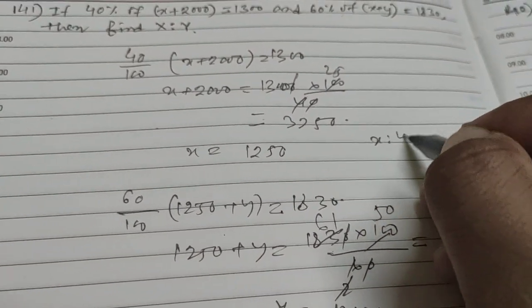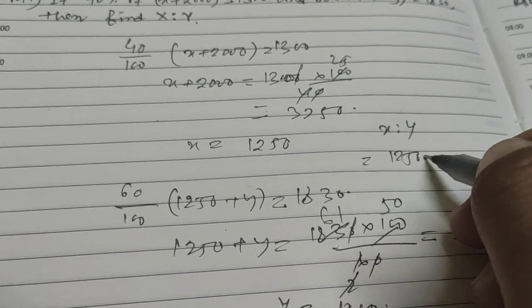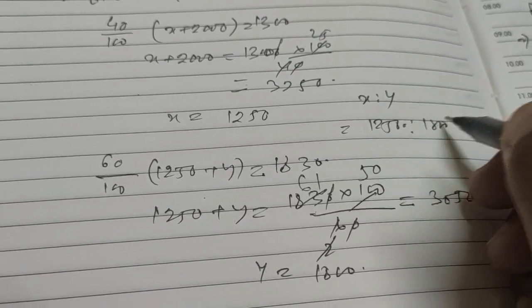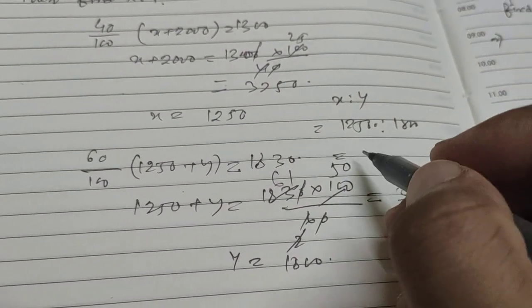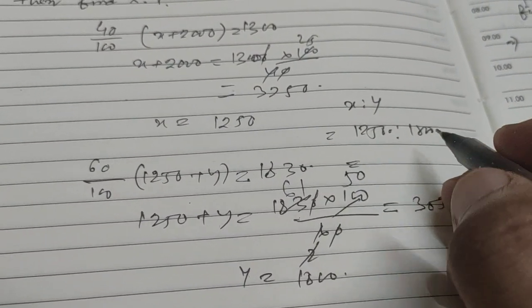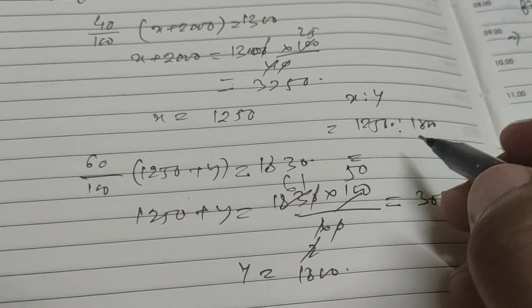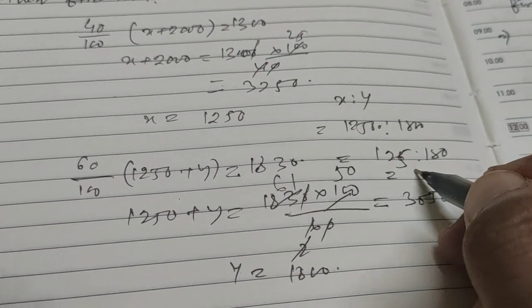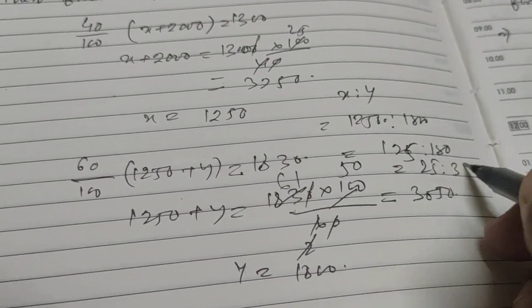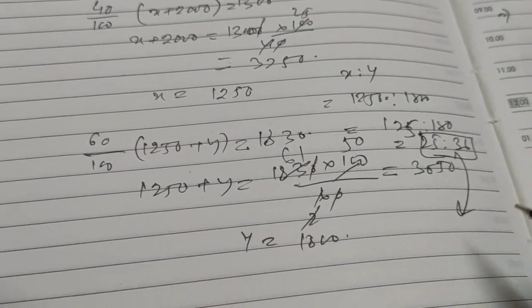You need to calculate x is to y. x is 1250 and y is 1800. So zeros will be cancelled out, means 125 is to 180. Dividing by 5: 25 is to 36.